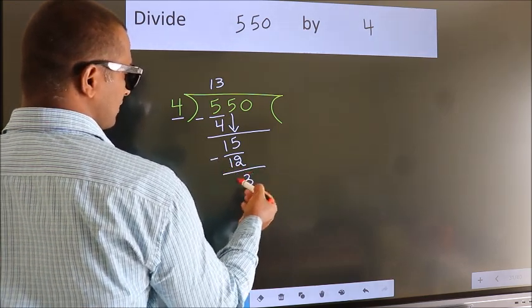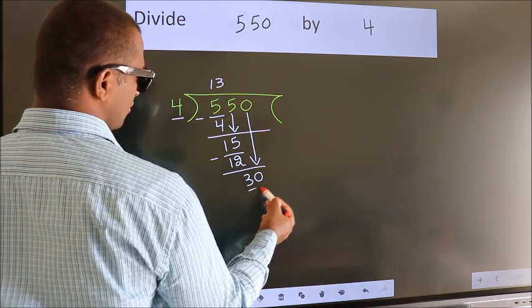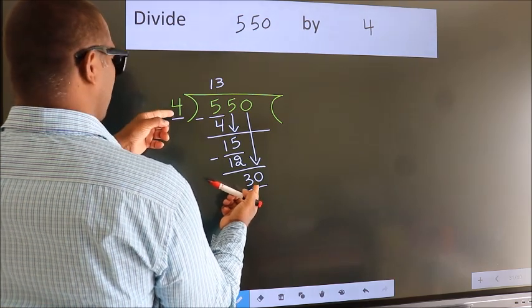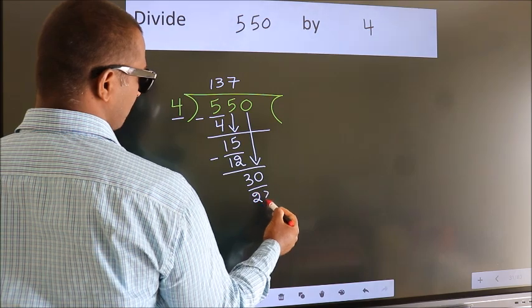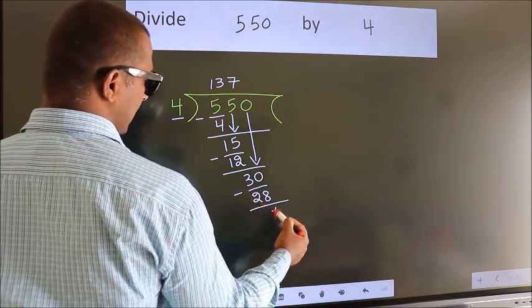After this, bring down the next number. So 0 down, making 30. A number close to 30 in the 4 table is 4 sevens, which is 28. Now we subtract. We get 2.